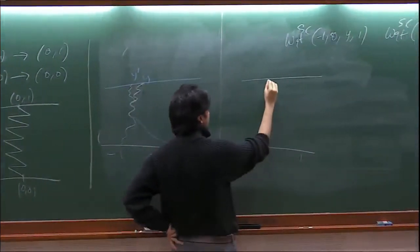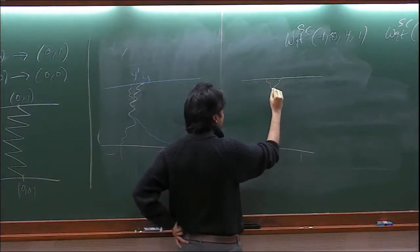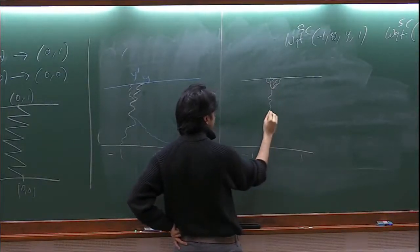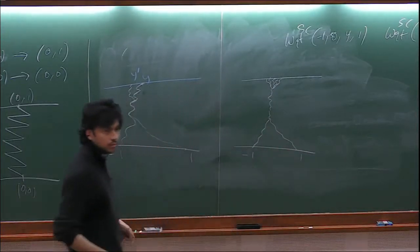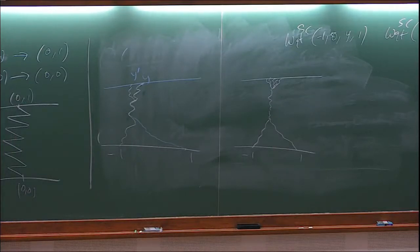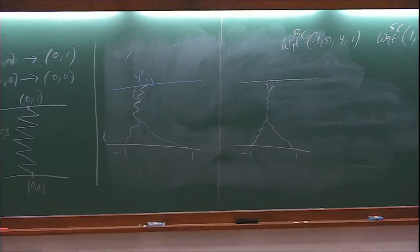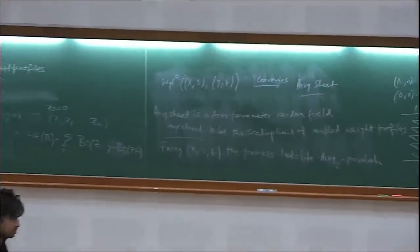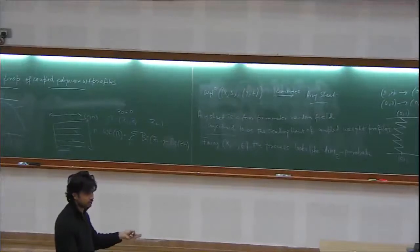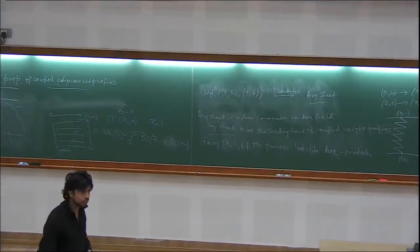If you start from the same point y and want to end at two different points minus one and one, the two best paths going to different destinations will initially agree for some time, and only at the end split. The same picture would be true for an interval of y near this: a path from nearby y' will quickly merge to this path, share the journey for some time, and then again split. This is the coalescent structure.